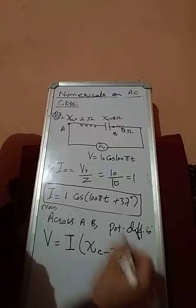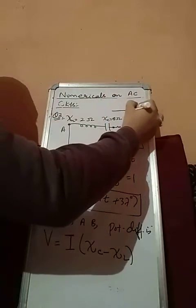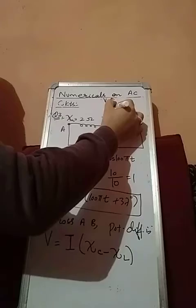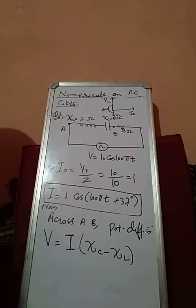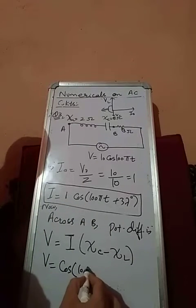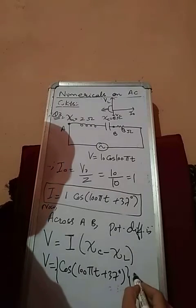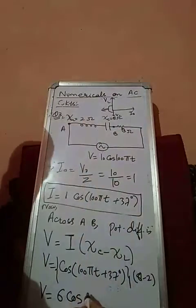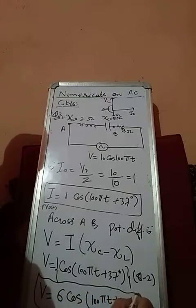It is chi C minus chi L because this is LC circuit. If you take the phase of current, voltage across inductor will go ahead, voltage across capacitor will lag behind. So these two vectors are in opposite direction, so their resultant will be simple subtraction. That's what we are writing here: V equals I cos 100 pi t plus 37 degrees.